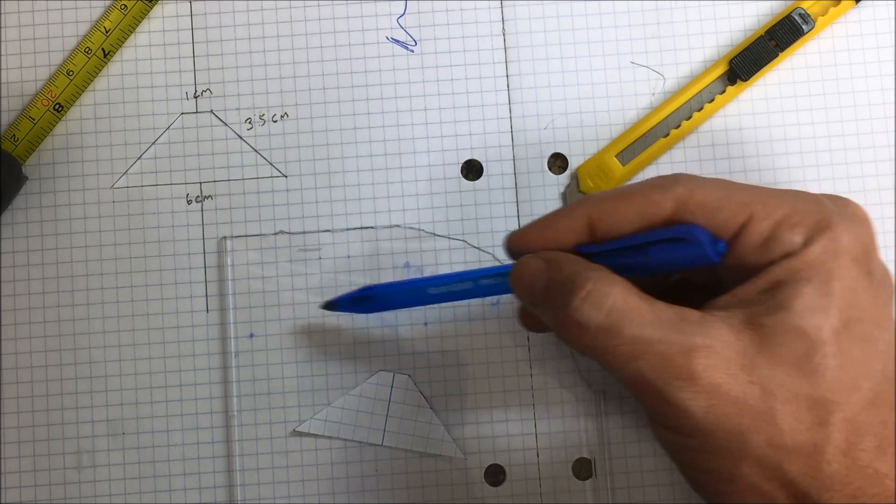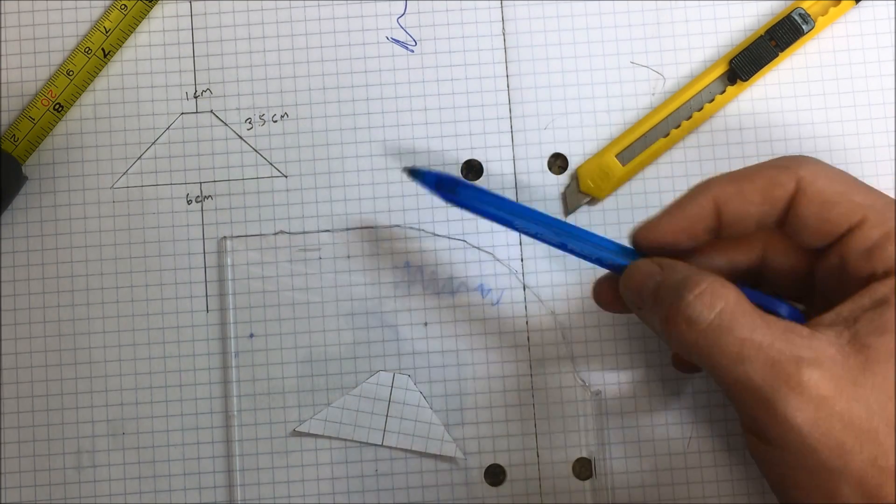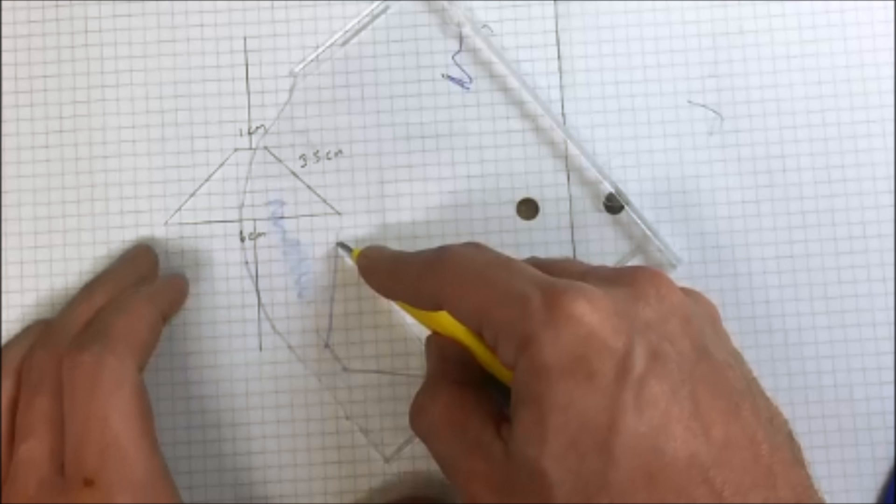One, two, three, four. Very easy to trace out now. So go ahead and trace out your shape.